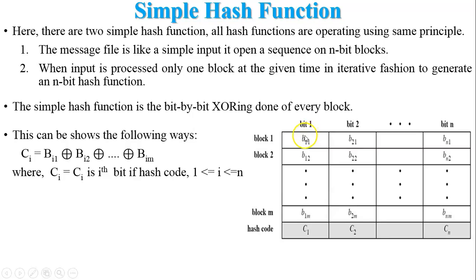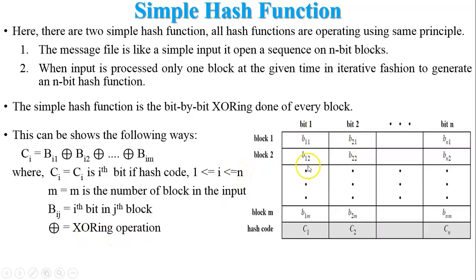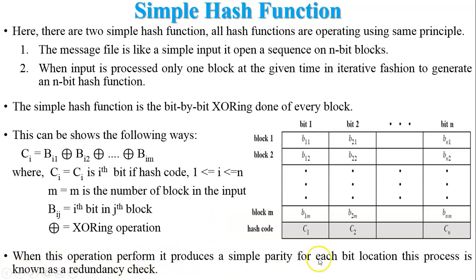In this table showing block-by-block XORing: ci is the i-th bit of the hash code. M is the number of blocks, and n is the number of bits per block. bij is the i-th bit of the j-th block — for example, b11 is the first bit of the first block. XOR is performed across all bits at each position to generate the hash code c1, c2, up to cn. This operation produces a simple parity for each bit location, and this process is known as a redundancy check.